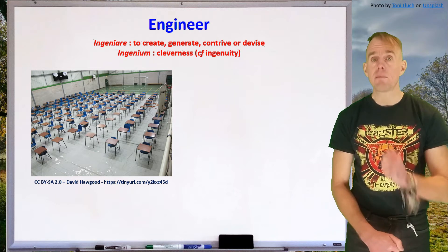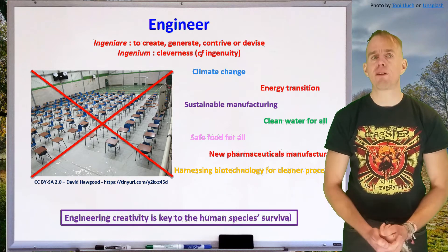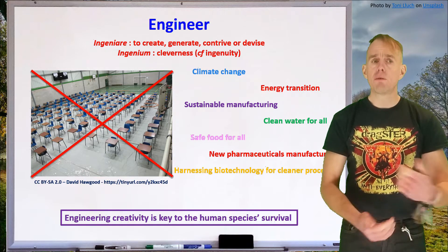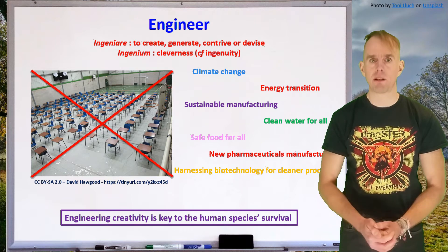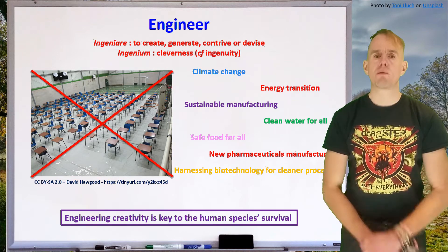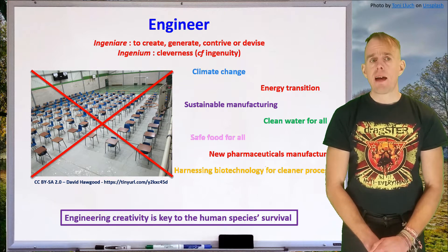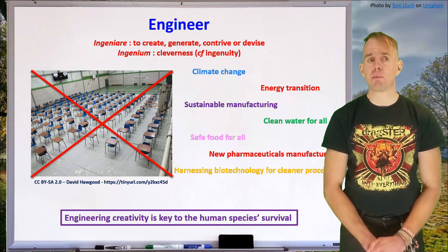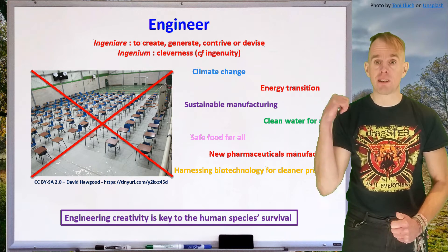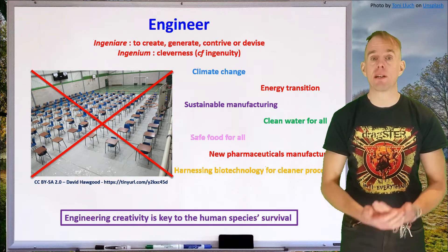If we think about some the big chemical engineering challenges going forward from now, we'll see that we've got things like climate change, the energy transition, sustainable manufacturing, how to make clean water for all globally, how do you make safe food for all globally, how do we do new pharmaceuticals manufacture on a global scale, particularly relevant in this year 2020, how do we harness biotechnology to make cleaner processes? These are all huge, huge problems to solve, notably climate change, notably the energy transition, notably issues of sustainability.